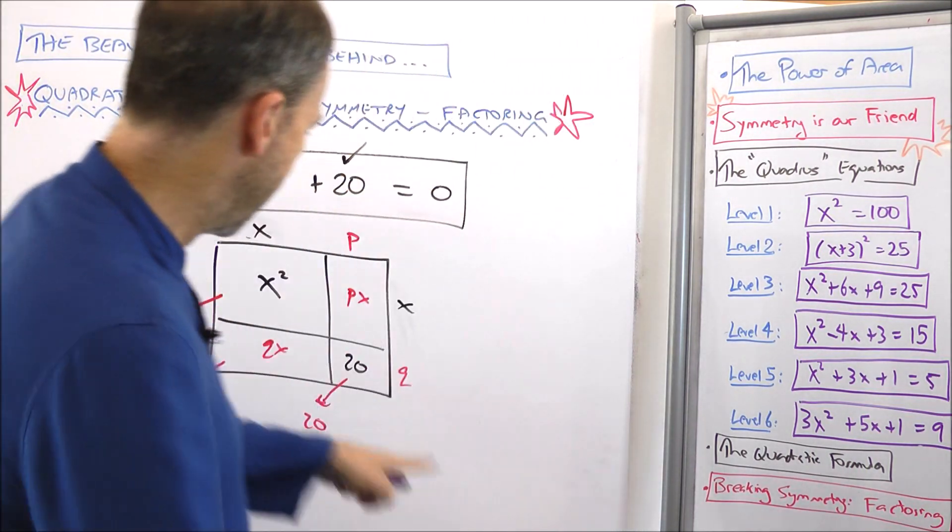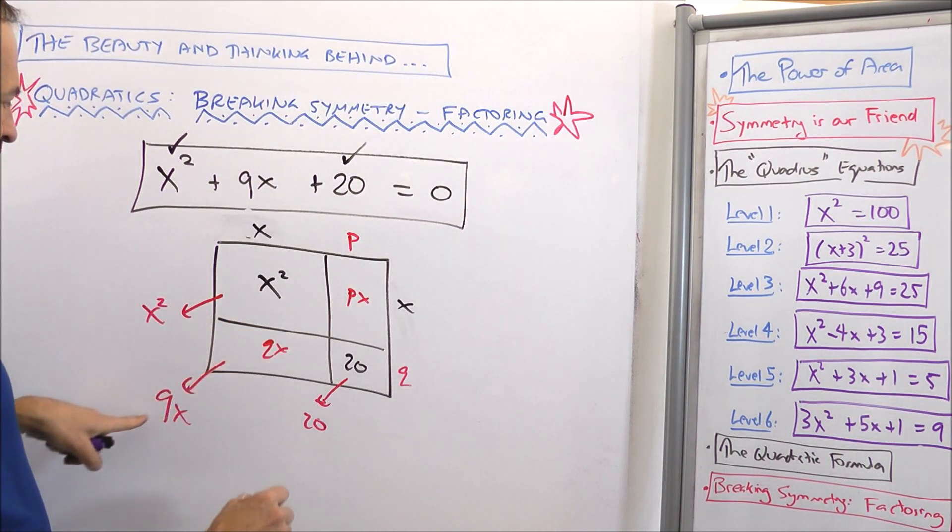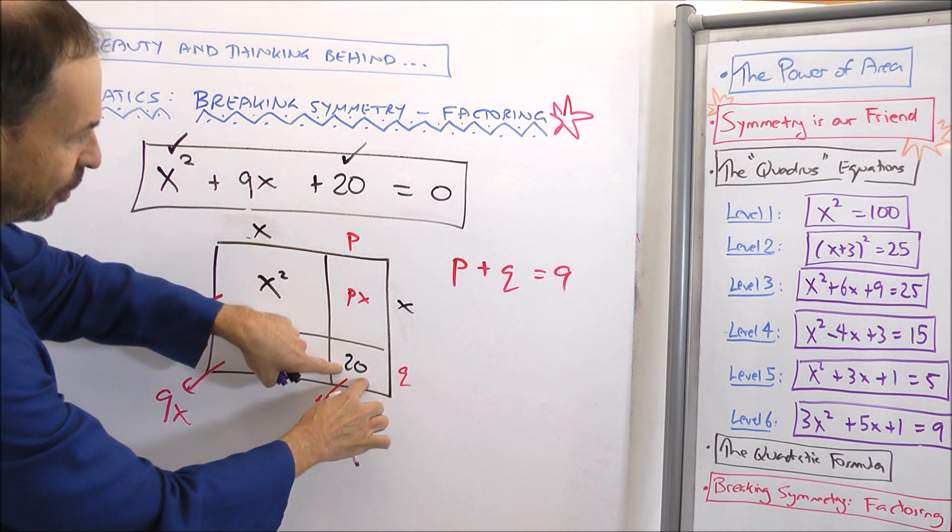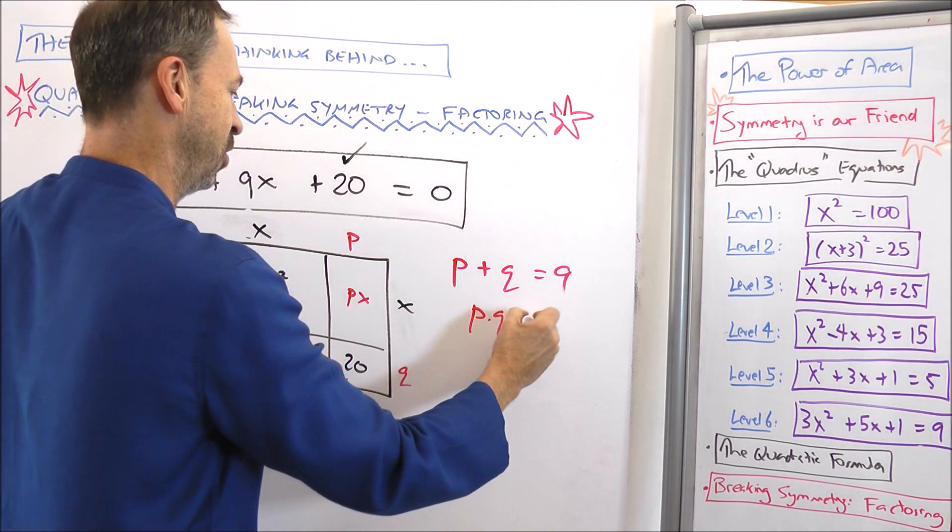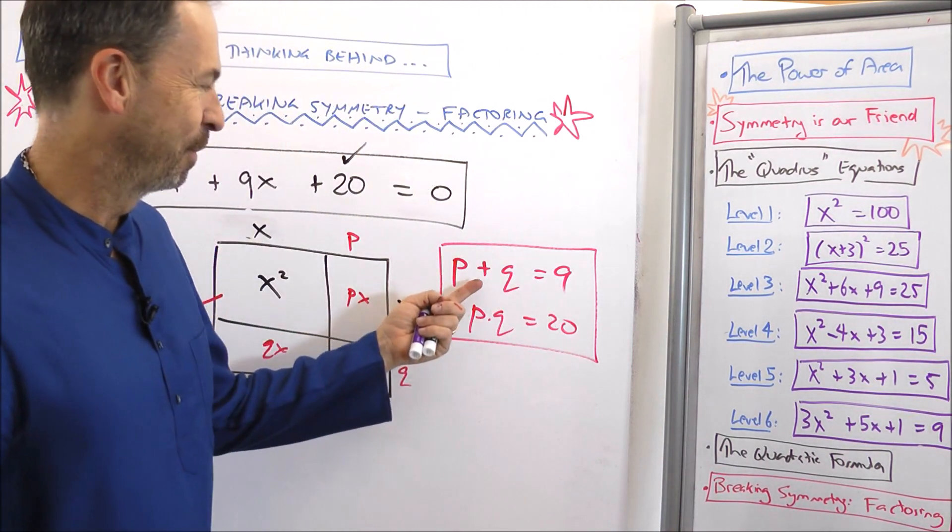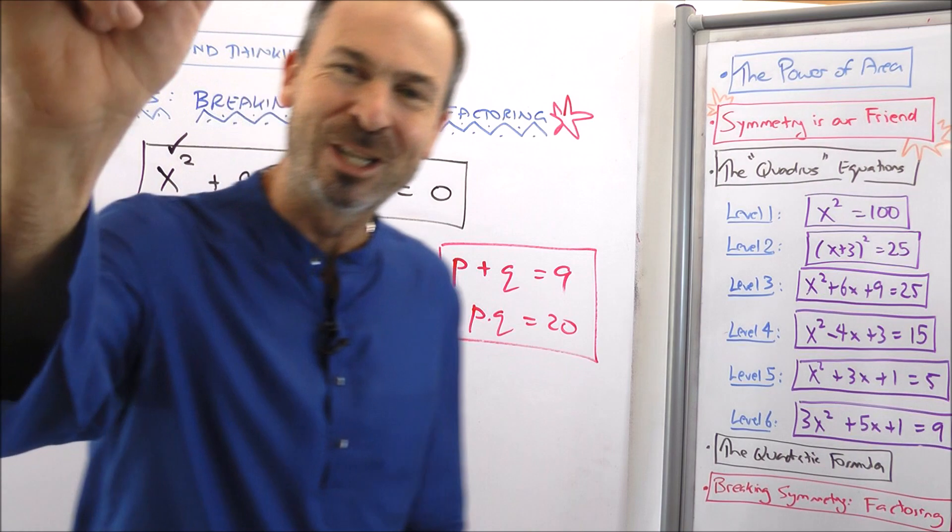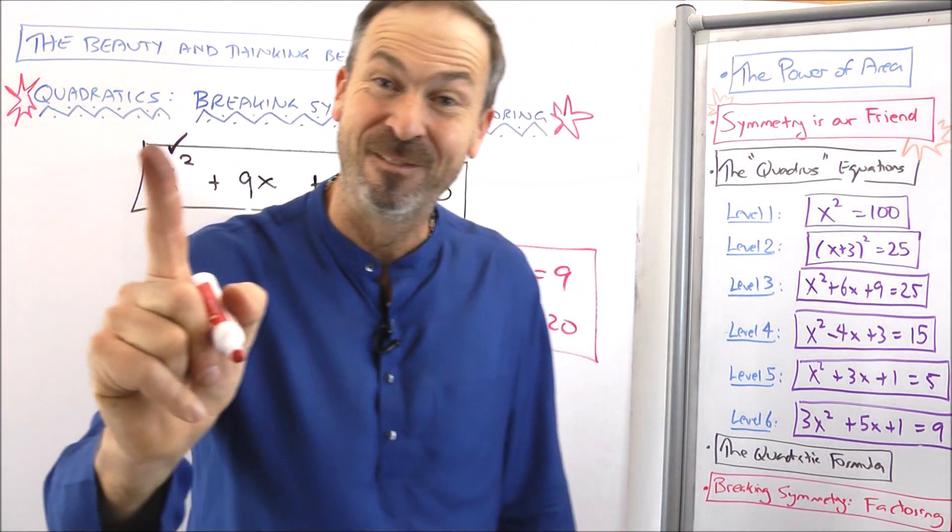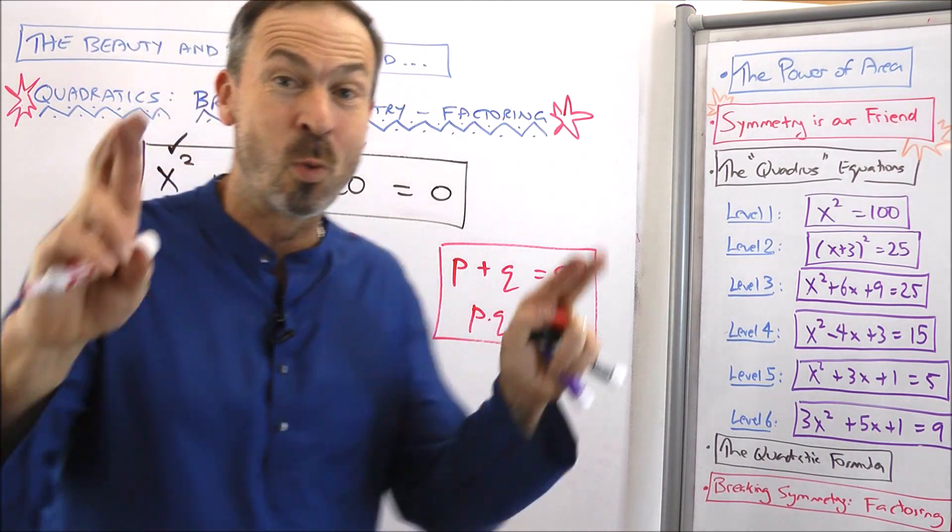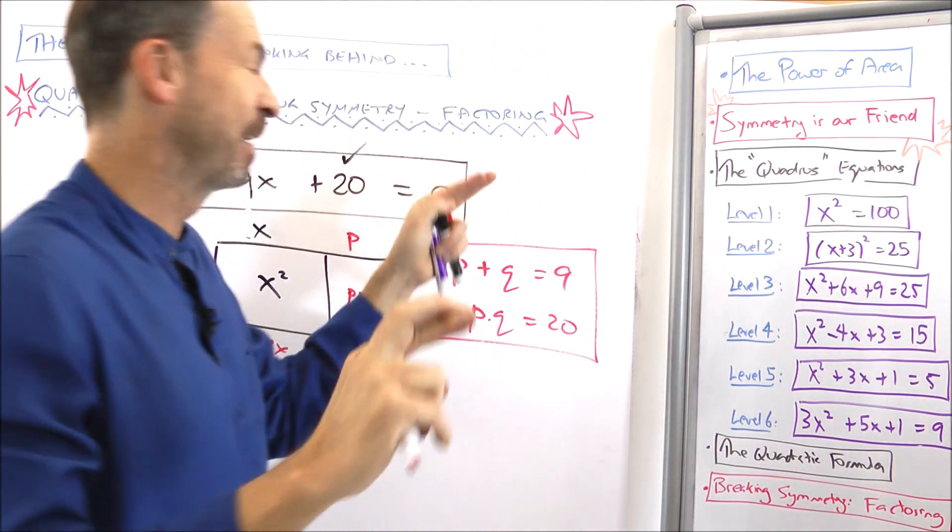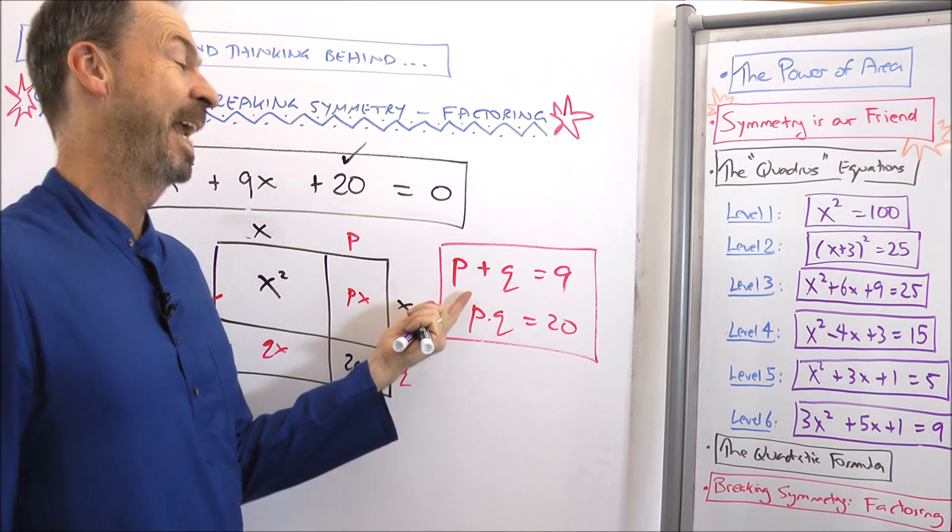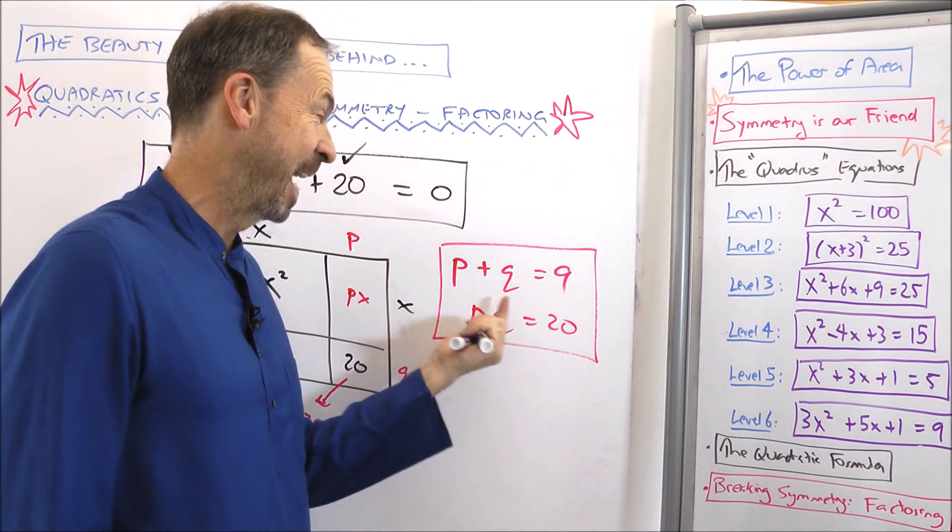Alright, so what do I need to be true? I need px plus qx to be 9x. I need p plus q to add up to 9. I also need p times q to be 20. So I need to play with those equations. Two numbers whose sum to 9 whose product is 20. And actually, we know from the last video, that's actually the problem I did at the very beginning of the puzzle. This doesn't always have answers. So we're crossing our fingers. This game of factoring is just like trying to do our best guesses and see what happens.